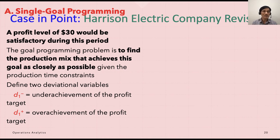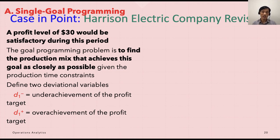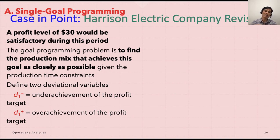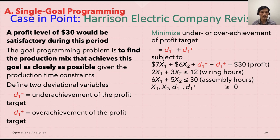We define two deviational variables: D1-minus and D1-plus. D1-minus is underachievement of the profit target. If the target is $30 but you achieve $29, the gap is 1, so D1-minus equals 1. If you achieve $28, then D1-minus equals 2. D1-plus is overachievement — if you wanted $30 but achieved $35, the gap is 5, so D1-plus equals 5.